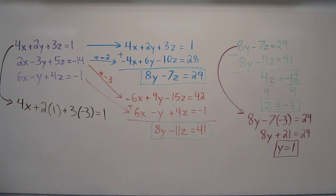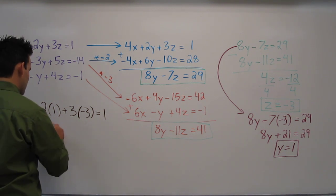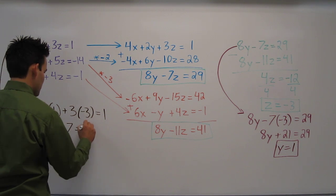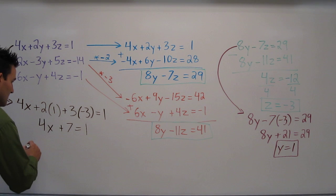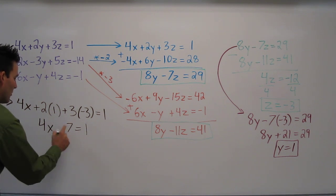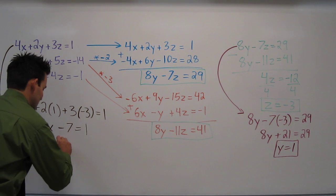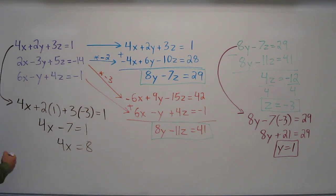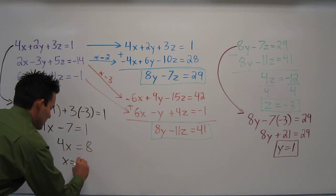Now let's do some algebra to figure out what x is. 4x minus 7 equals 1. Add 7 to both sides and we have 4x equals 8. Divide both sides by 4 and we finish with x equals 2.